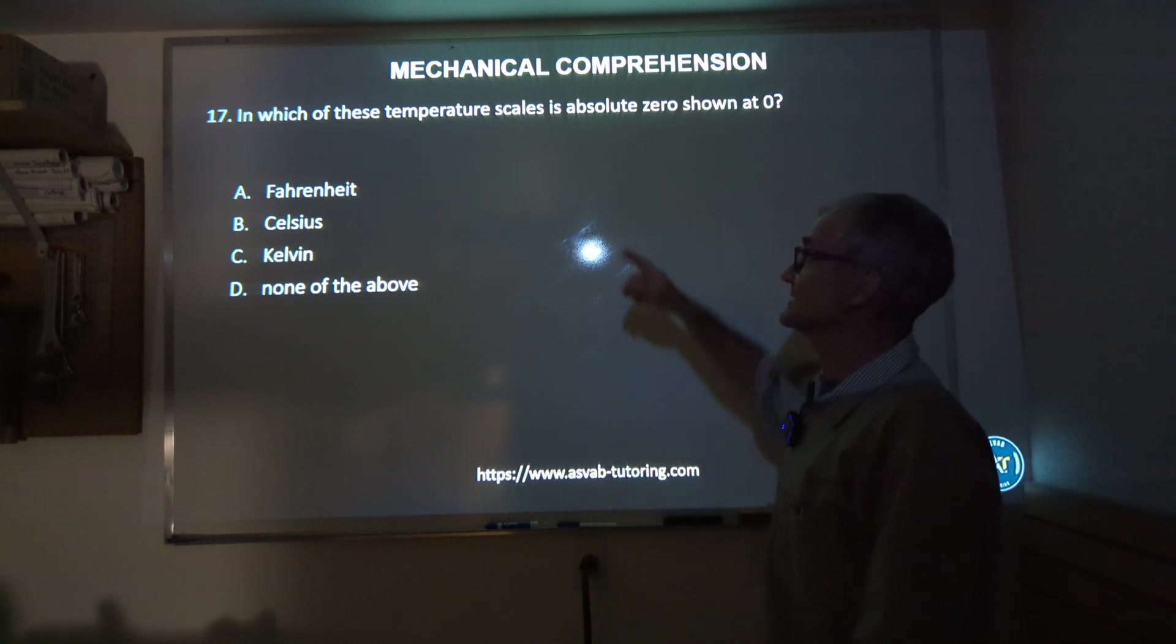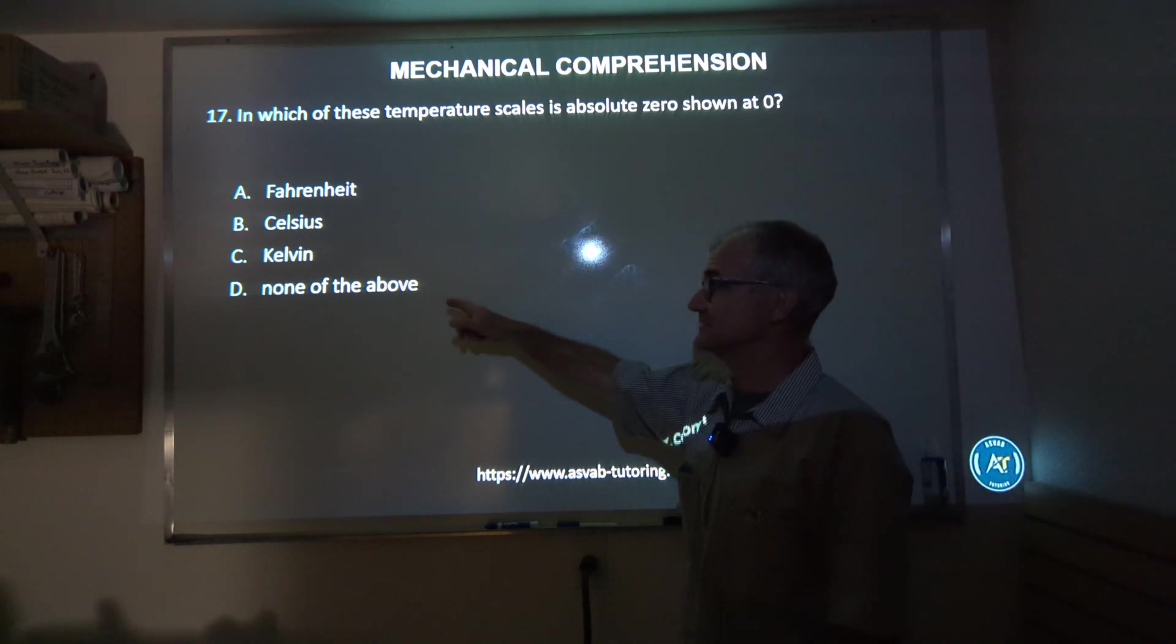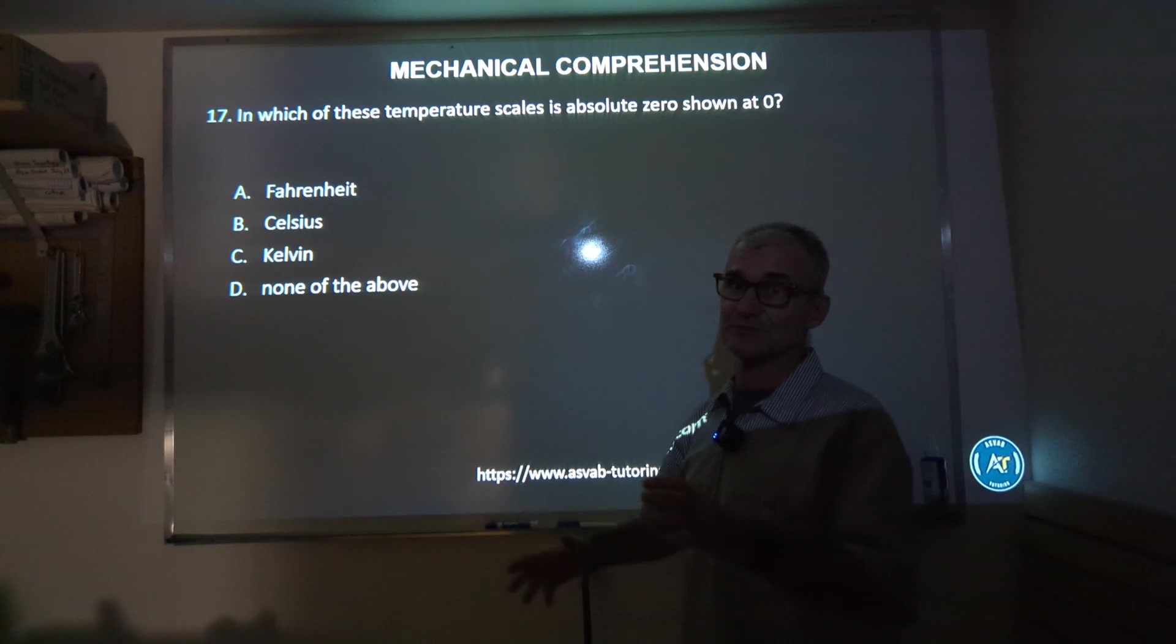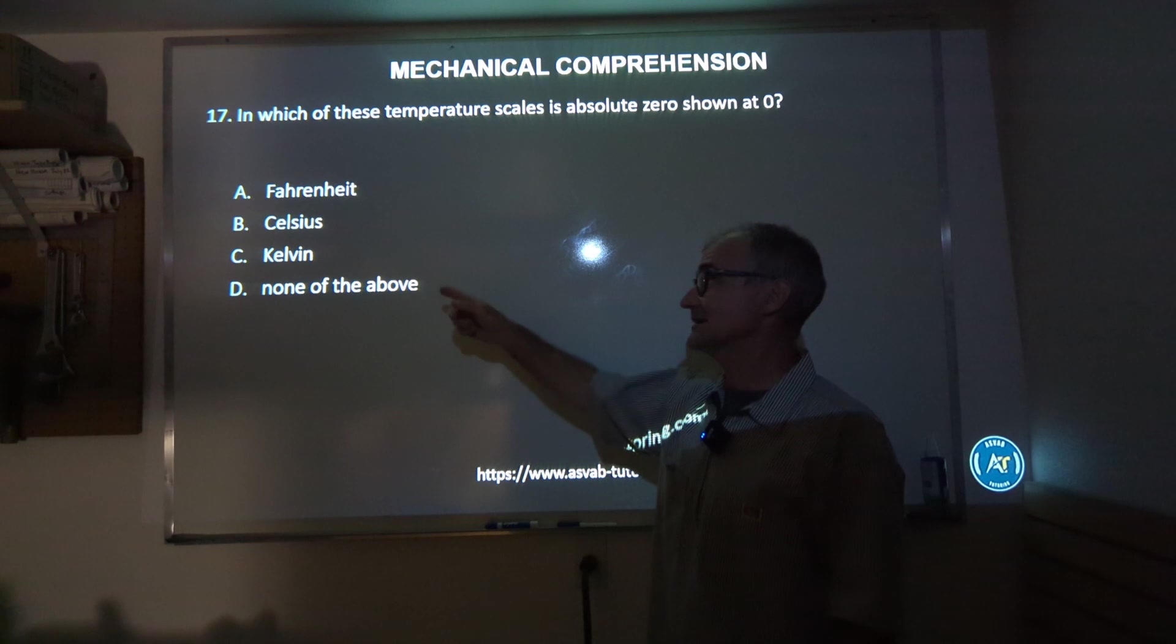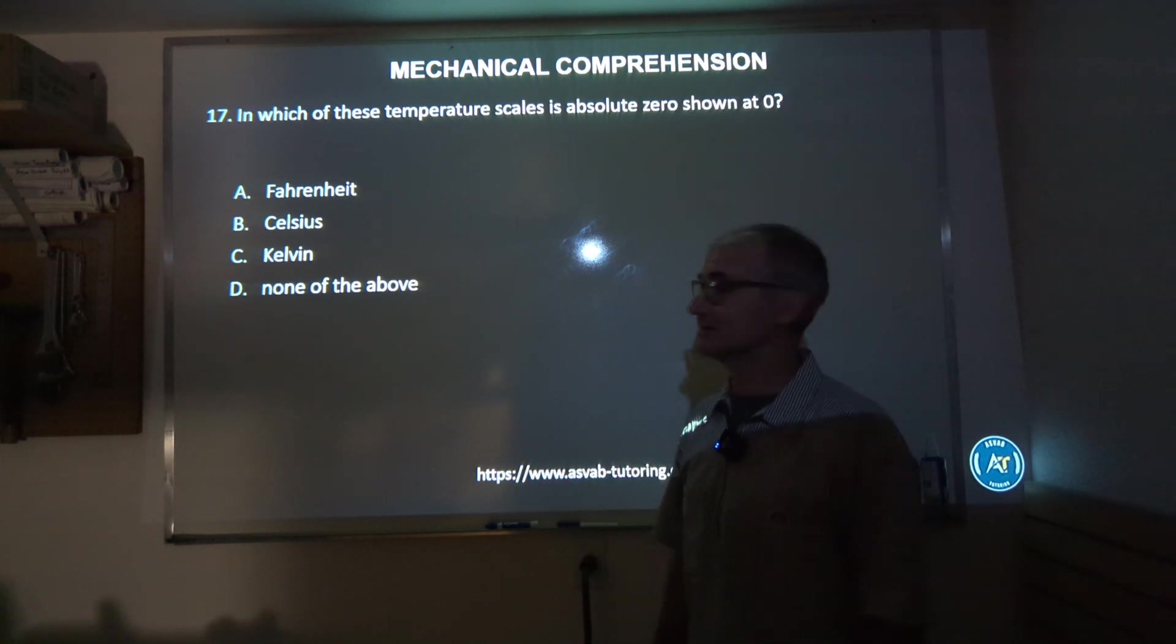Number 17: in which of these temperature scales is absolute zero shown at zero? Fahrenheit, Celsius, Kelvin, or none of the above. Well, Fahrenheit is your day-to-day temperature reading in the US, how warm it is outside. Celsius is the exact equivalent of Fahrenheit except it's a metric equivalent for the rest of the world. Then Kelvin is a scientific measurement for temperature. So the correct answer is answer C, Kelvin.